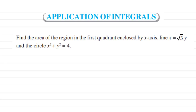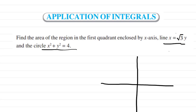Here I have taken a question from application of integrals — you have to find out the area of the region in the first quadrant enclosed by two curves: one is a line and the other is a circle. In these types of questions, the first step is to draw the figures according to the given equations. You just have to draw a rough diagram; you don't need to draw these things accurately.